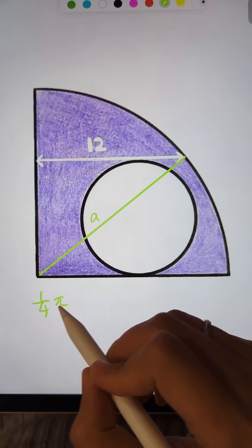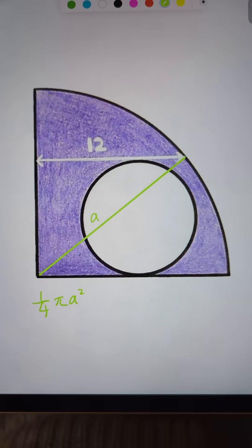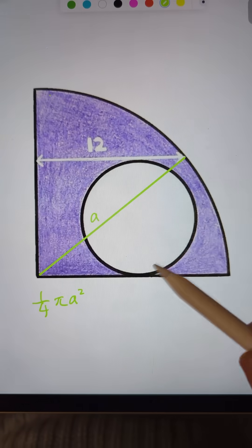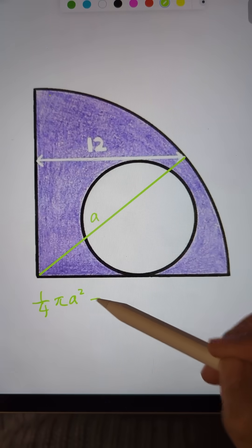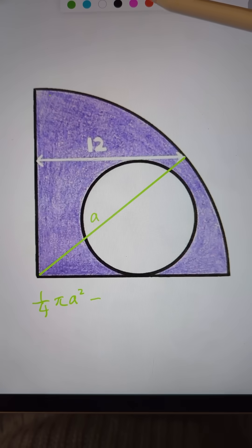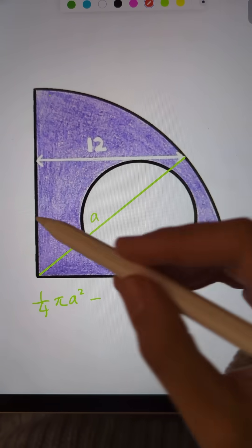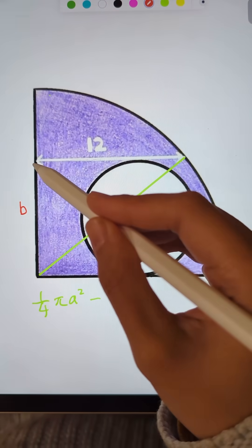Then it's pi a squared divided by 4, because it's just a quarter. And then what's the smaller disc area? Let's say if this is b.